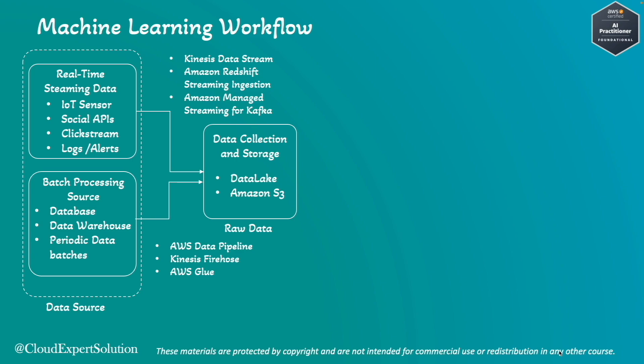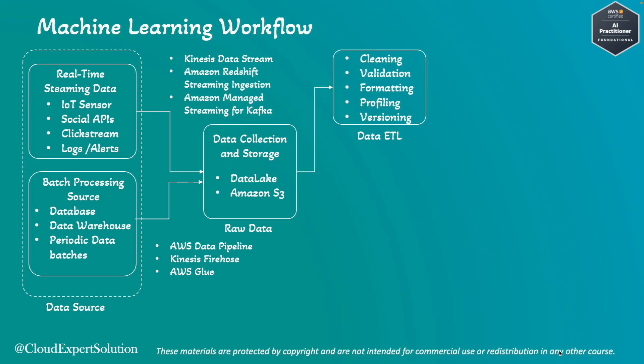Once we have the data connectors set up and have the raw data, the next step is Data ETL. Data ETL involves data cleaning, data validation, data formatting, and data versioning. You may be receiving data in multiple different formats — some in .txt format, some in JSON format, some in timestream format. However, you need a uniform format for machine learning training or inferencing.